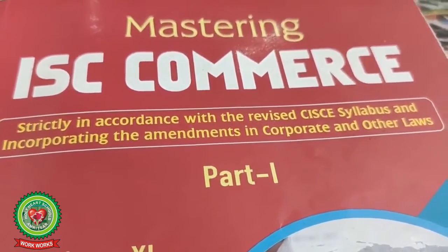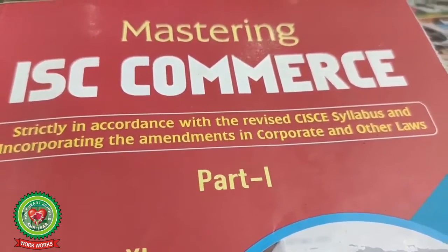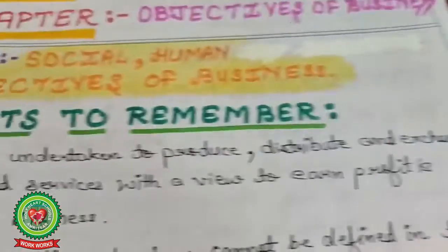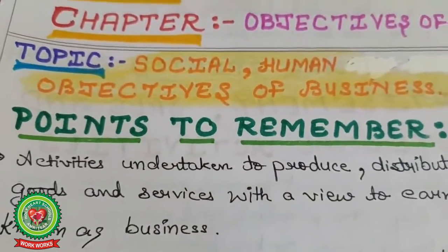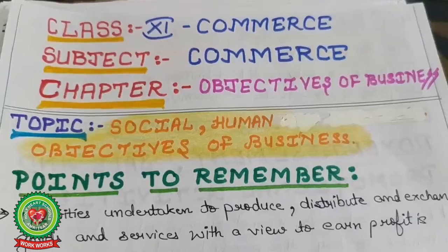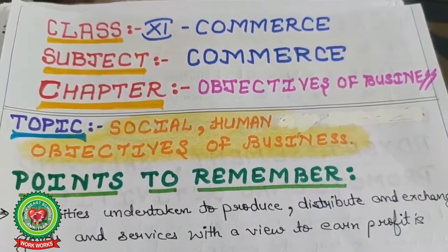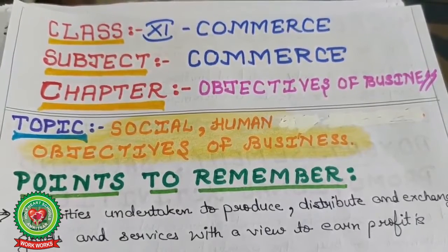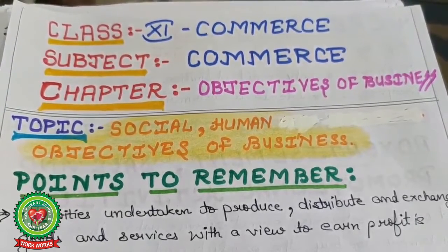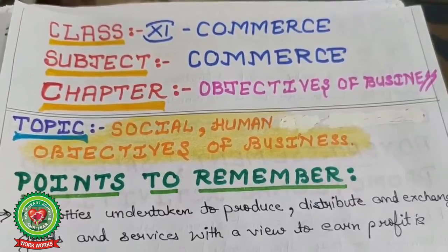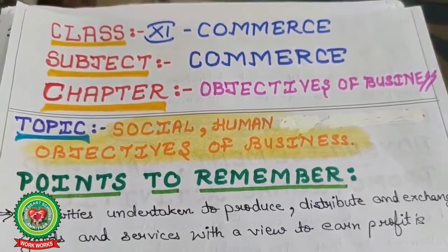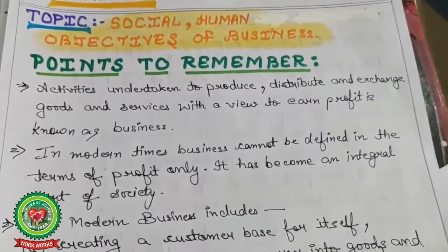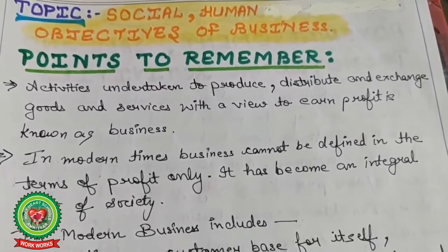Today I'm going to discuss the remaining two objectives of business: social and human objectives. So my today's topic is all about the objectives of business. Yesterday I discussed economic objectives; today I'm going to discuss social and human objectives of business. Here are some points to remember.